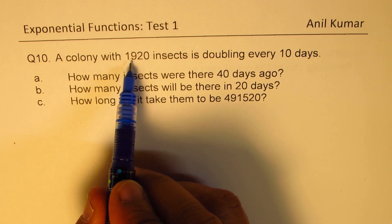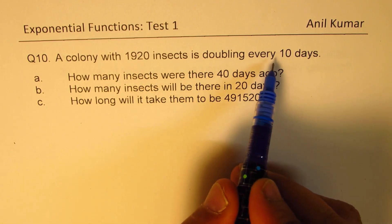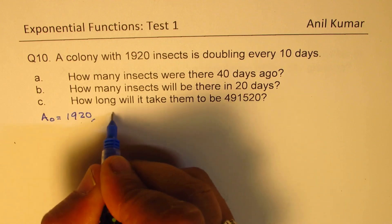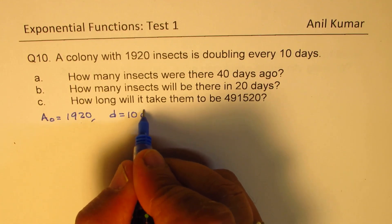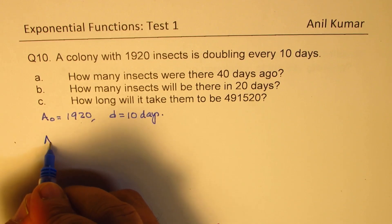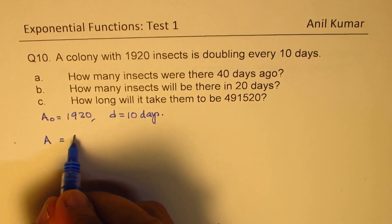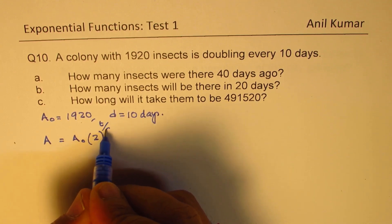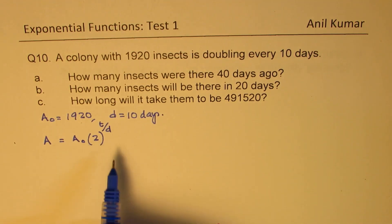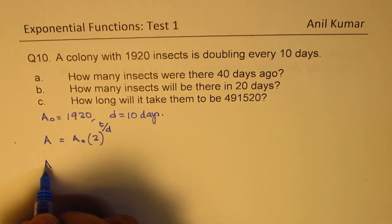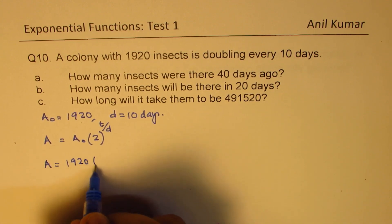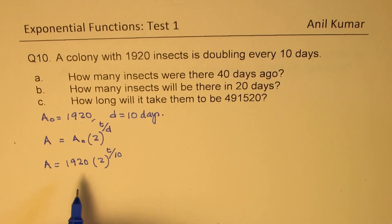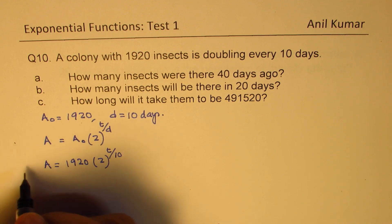We're given a colony with 1920 insects which is doubling every 10 days. So the initial amount is 1920 and the doubling period D is 10 days. At any instance of time, A equals the initial amount times 2 to the power of T over D. We know these two values, so we write A equals 1920 times 2 to the power of T over 10. That becomes our equation, and we'll always work with this.